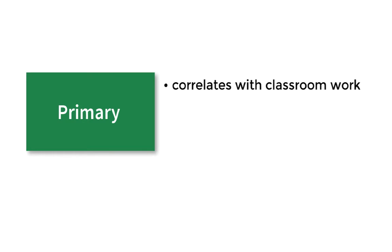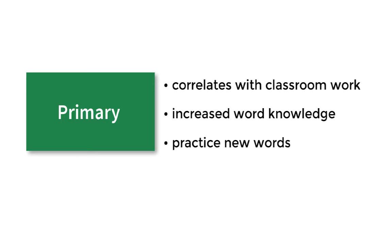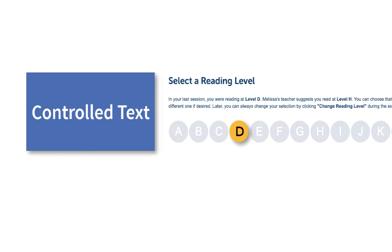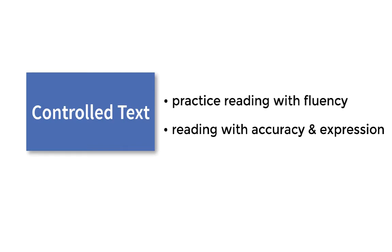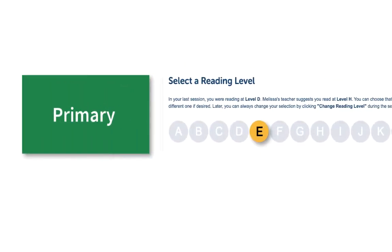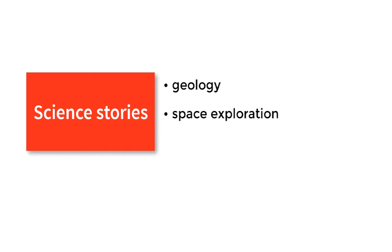Primary stories use words that students are learning in first grade. By reading these stories, students are increasing their word knowledge and practicing newly learned words. Once you feel your student has mastered a level of primary stories, it may be time to test their fluency skills using the controlled text stories. Controlled text stories begin at level D. When reading controlled text stories, we want students to practice reading with fluency — can the student read without having to stop and sound out the word, read the text accurately and with expression? Students who can read controlled text stories fluently are ready to move to the next primary story reading level. Science stories are presented in later levels; they are very engaging and introduce science-related content about the earth, space exploration, and chemistry.